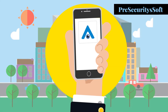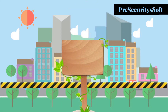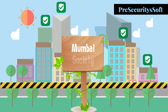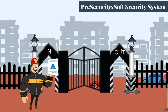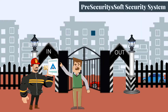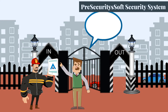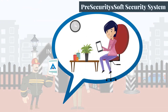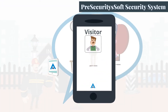PreSecuritySoft has developed an Android-based app which will enable to increase the security of residential societies. It will verify a visitor's mobile number with an OTP, capture their image, and a notification will be sent to the resident. The resident can welcome the visitor by approving, or reject or block the visitor as per his wish.